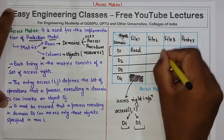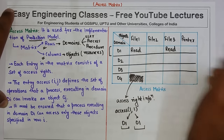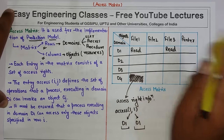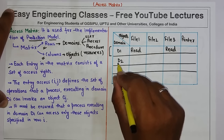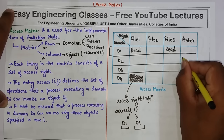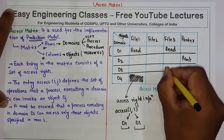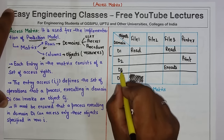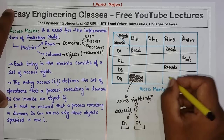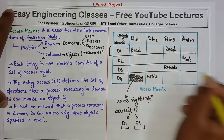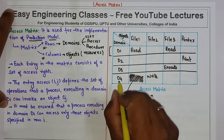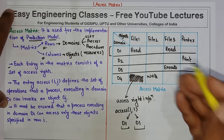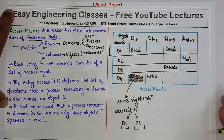Similarly, if I have an entry 'read' for domain d1 and file3, it means the process executing in domain d1 can read file3. Similarly, if a process executing in domain 2 can give the command of print. If I give 'execute' for domain 3 and file3, it means a process executing in domain 3 can execute file3. Similarly, if I have 'write' for domain 4 and file2, it means a process executing in domain 4 can issue a write operation on file2. In this way the access matrix works, and each entry is representing the access right information.